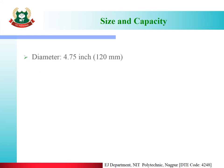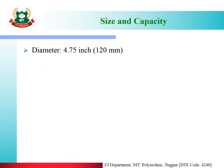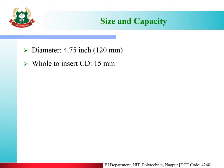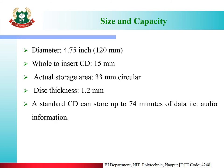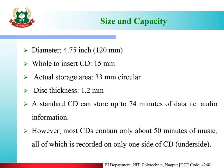Size and capacity: The diameter is 4.75 inches, that is 120 mm. The hole to insert the CD is 15 mm. The actual storage area is 33 mm circular. The disk thickness is 1.2 mm. A standard CD can store up to 74 minutes of audio data.